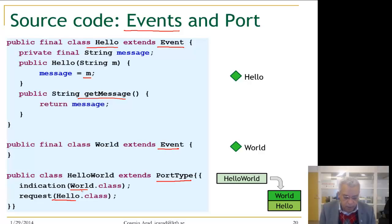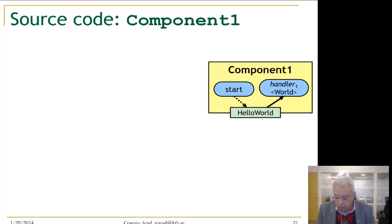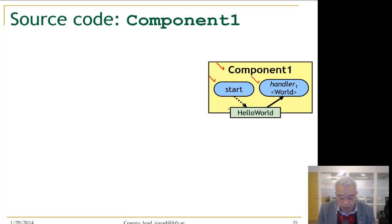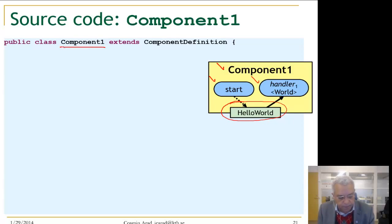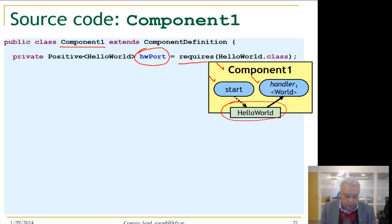We then define our port, which accepts a hello request event and produces a world indication event. Now let us look at the source code for component 1. Component 1 extends ComponentDefinition. We create a port that requires the Hello World type. In Compex, the required port and the provided port are complementary. If you require a port you are on the positive side, and if you provide a port you are on the negative side — this is just a notation convention.